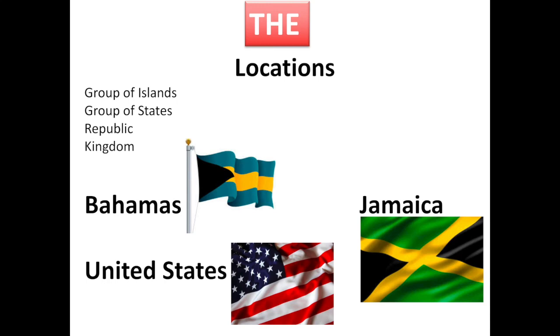When you're talking about locations, we use the with specific locations. Let's look at when to use it and when not to use it. For example, group of islands: Bahamas is a group of islands, so we say the Bahamas. Jamaica, even though it's in the Caribbean as well, is not a group of islands. It's actually one island, so you can't say the Jamaica. You only say Jamaica.